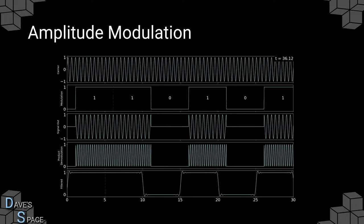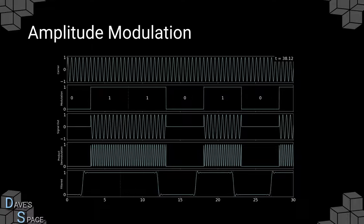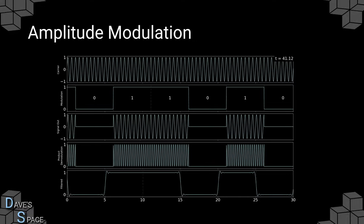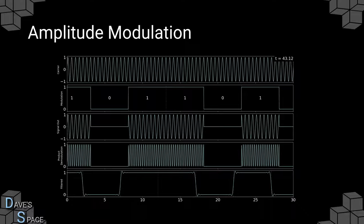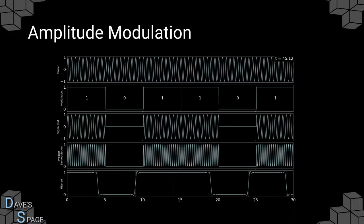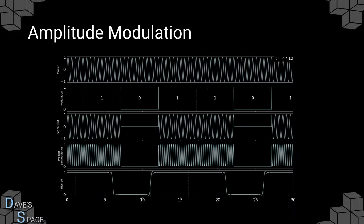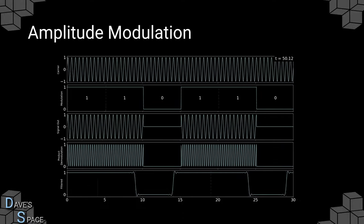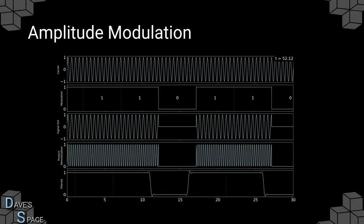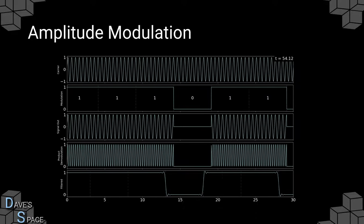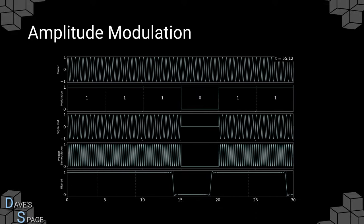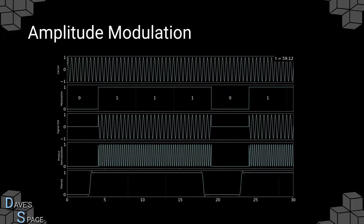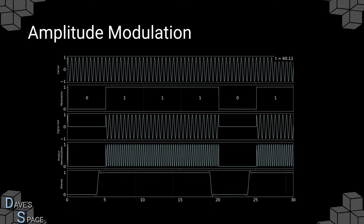On the receiving end we get a signal which we can then process using product demodulation. Product demodulation is when we multiply the signal by a sinusoidal waveform at the same frequency as the original carrier wave. Once we filter out the high frequency components, what we're left with is something that resembles our original modulation waveform very closely.